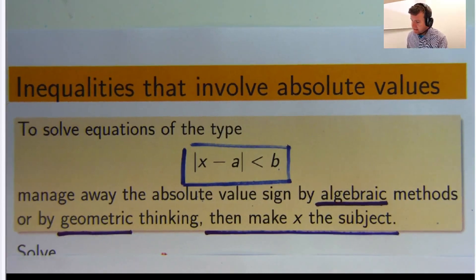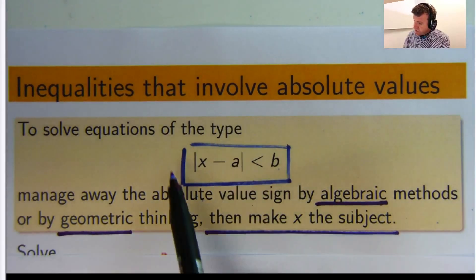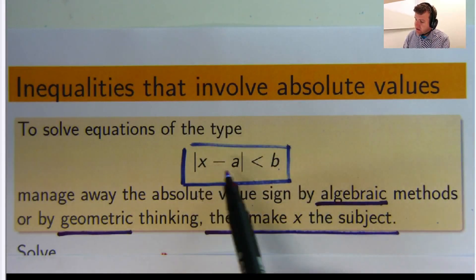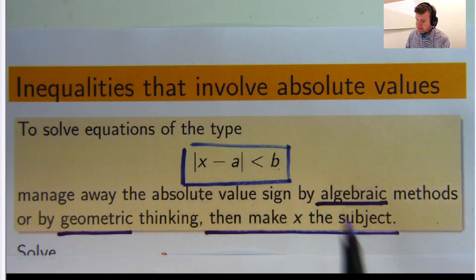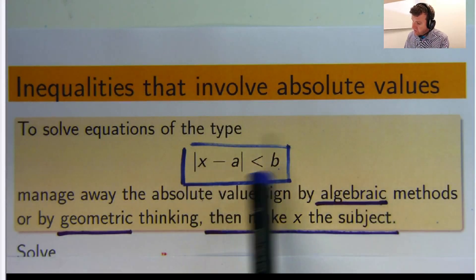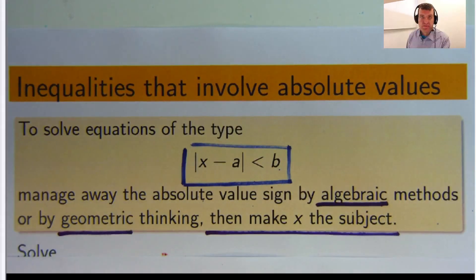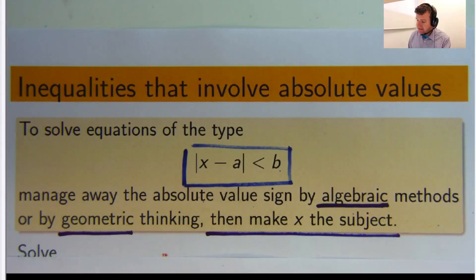So we had something like this. We were looking at inequalities of this type where x is the unknown and a is a number and b is a number. And the idea, at least from the procedural point of view, was to solve this, find x using either algebra or geometry, and then make x the subject.